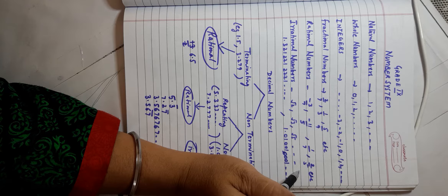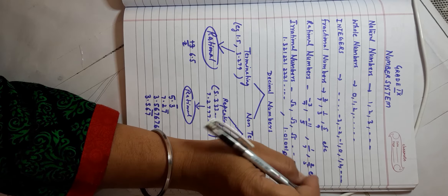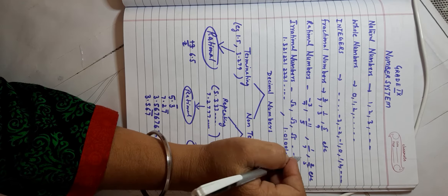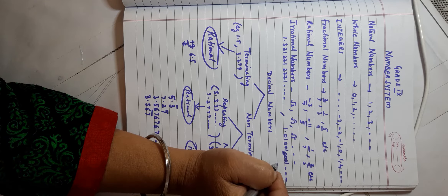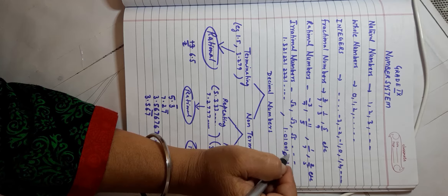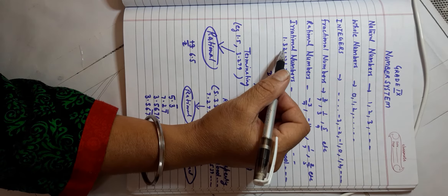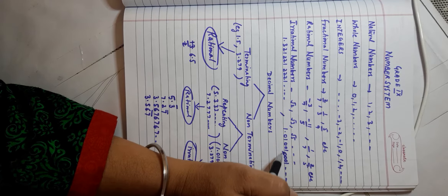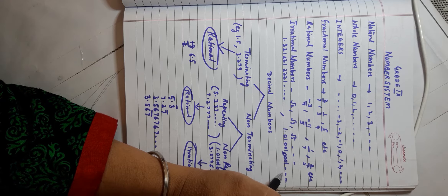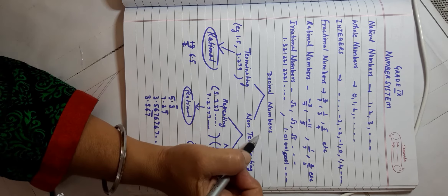Now, on the number line, even when filled with all these types of numbers, there is still some space left. Those remaining positions are filled by numbers that do not fall into any of the previous categories — they were named irrational numbers. For example, √2, √3, √5, and so on. There are also numbers like 1.3212212221... which follow some pattern but are never-ending and non-repeating. These kind of numbers fall in the category of irrational numbers.